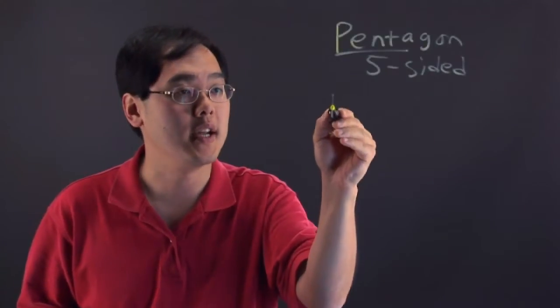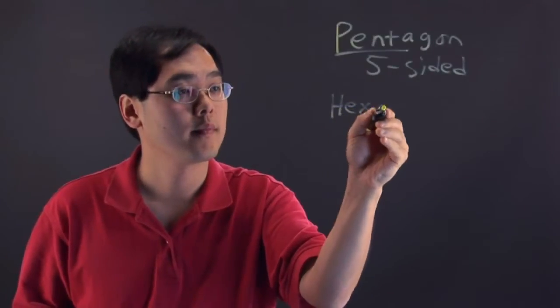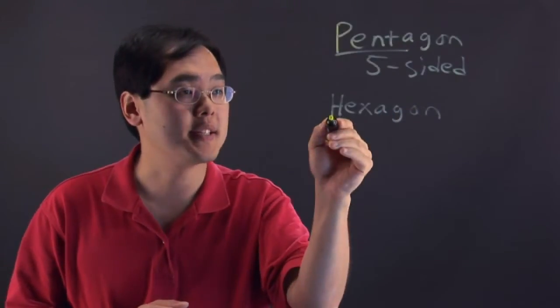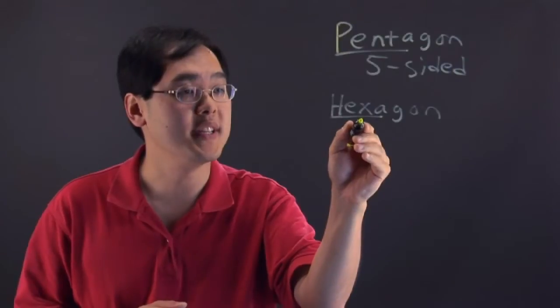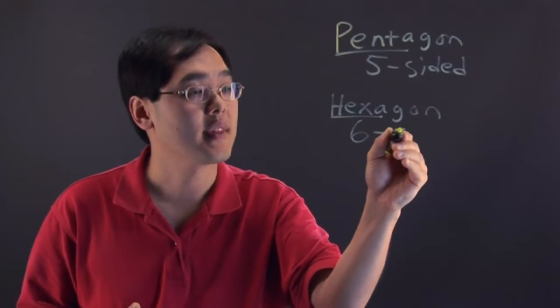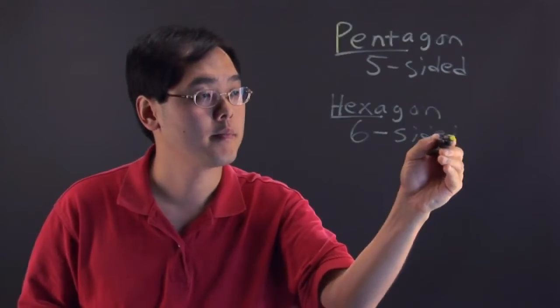Now the hexagon, the prefix there is hexa which is going to be six. So a hexagon is going to be a six-sided polygon.